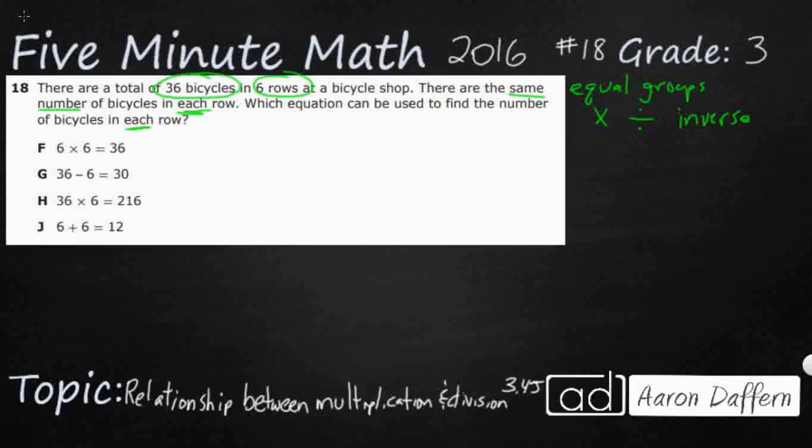We've got 6 rows, so I'm just going to draw 6 rows here. So I've got 3, 4, 5, 6. So when all else fails, just take your 36 bikes. I'm not going to draw bikes, I'm going to use little slashes, and we're just going to see.